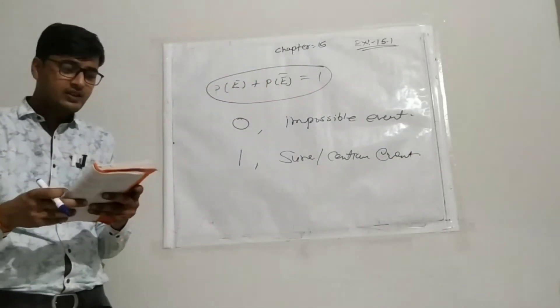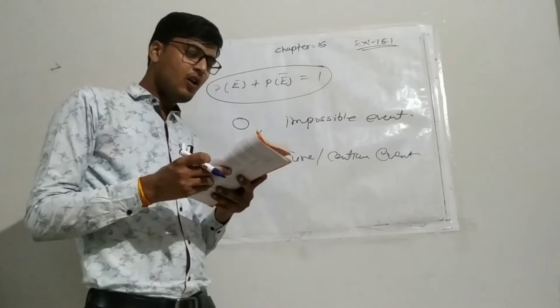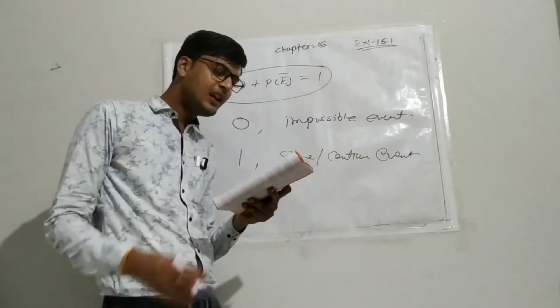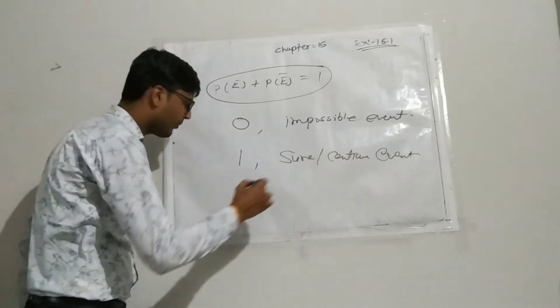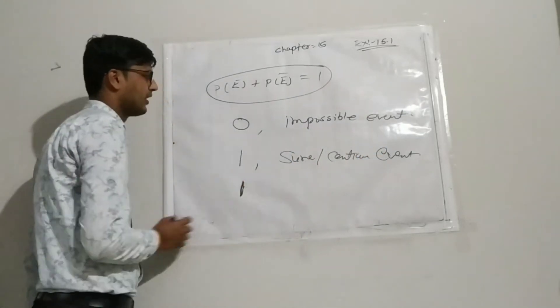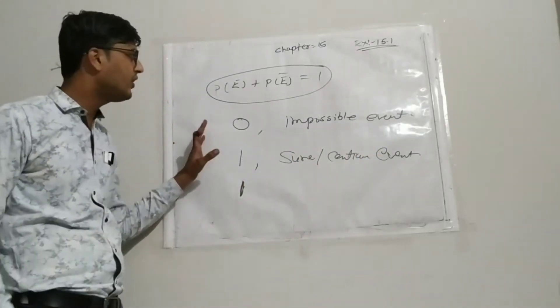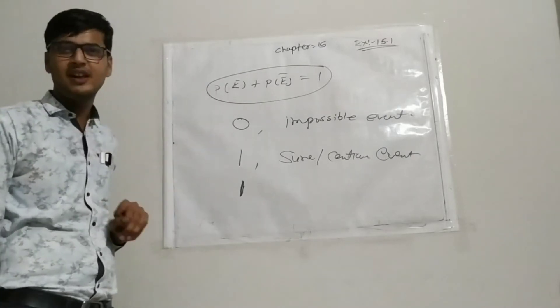Now fourth. The sum of all probabilities of all the elementary events of an experiment is. Sum of all probabilities equals to 1. This introduction video you have seen, all concepts you will get there.